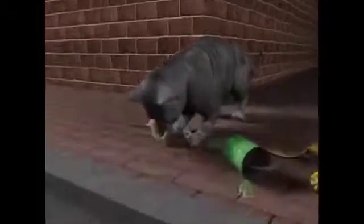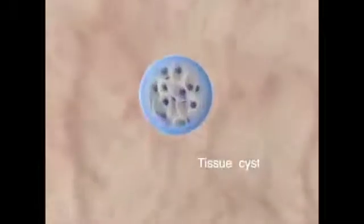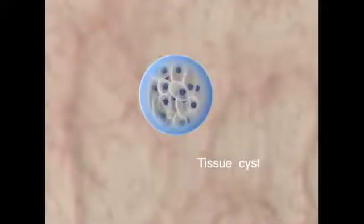The infective parasites are inside the tissue cysts, present mainly in the muscles and brain of the animal. Usually, cats get Toxoplasma at an early age.